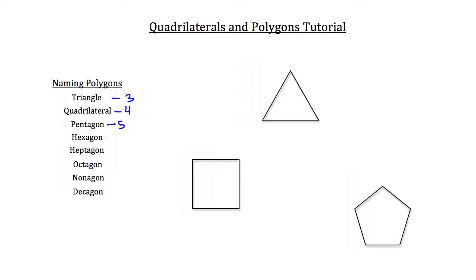Pentagon, five sides. Hexagon, six sides. Heptagon, seven sides. Octagon, eight. Nonagon, nine sides. And decagon, ten sides.